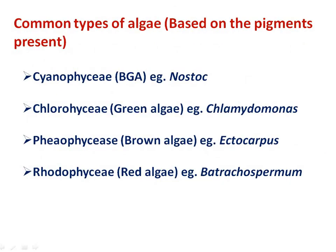Based on color, algae are of different types. The first type is Cyanophyceae — the color of this algae is blue-green because of the presence of a pigment called phycocyanin; that is why it is called blue-green algae. Examples of blue-green algae are Nostoc and Anabaena. The second type is Chlorophyceae.